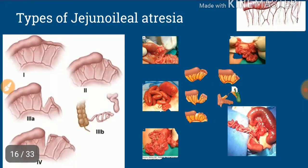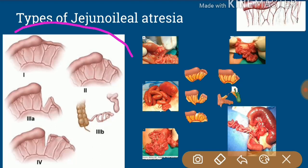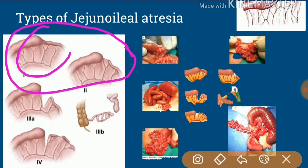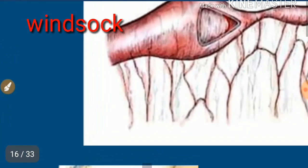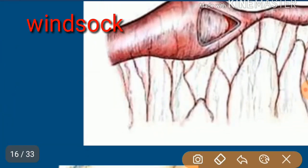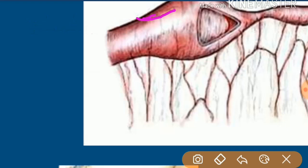In both Type 1 and Type 2 atresia, there is not much loss of bowel length. However, in Type 1 atresia there is a variant known as the wind sock variant. In this case, the obstruction starts at one point, but due to ballooning, the atretic membrane has ballooned distally.